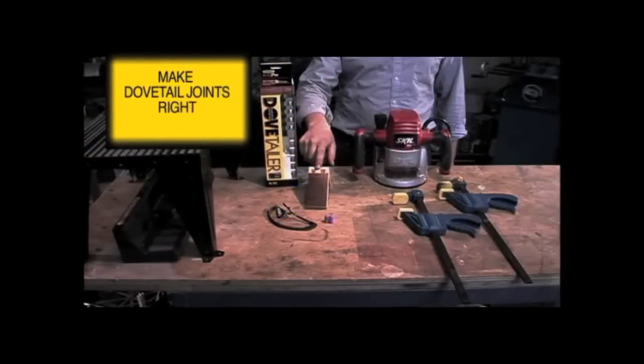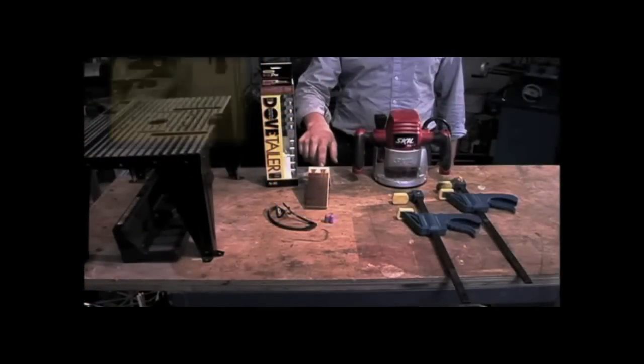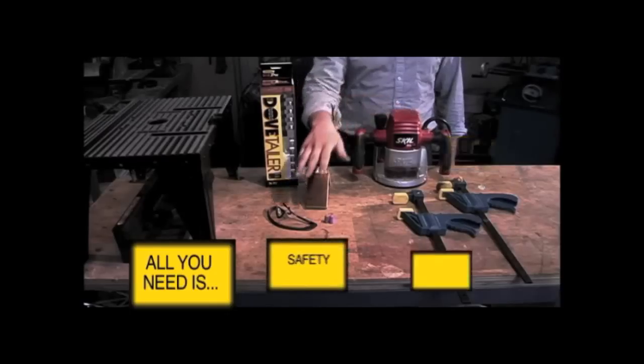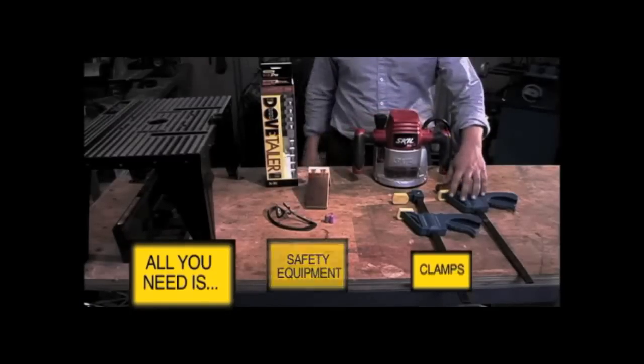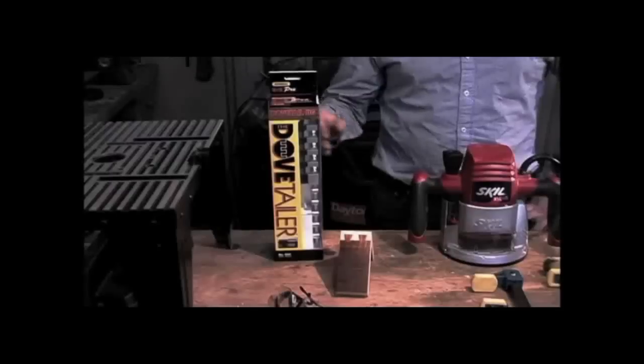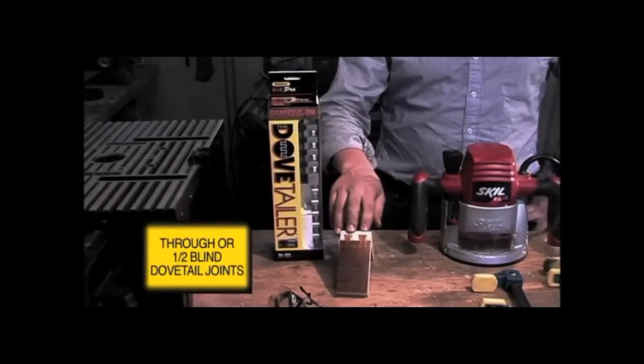This is the EZ-Pro Dovetail Jig. Using it you can make dovetail joints halfway or all the way through, and all you need is your router, safety equipment, and some clamps. Or you could also use it on your router table. We're going to be making dovetail joints today.